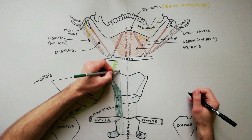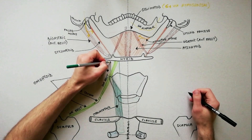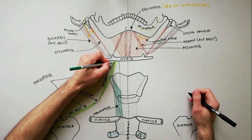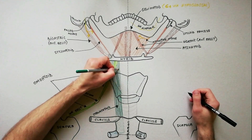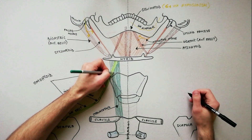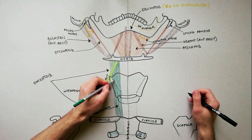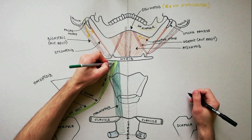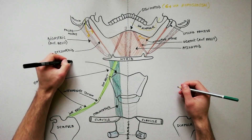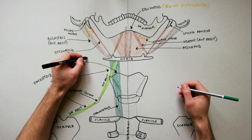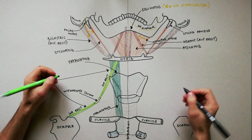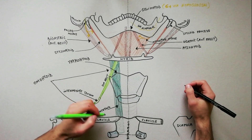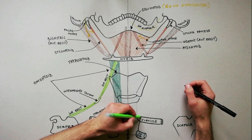The thyrohyoid muscle is an upward extension of the sternothyroid and originates on the oblique line of the lamina of the thyroid cartilage, to be inserted on the lower border of the greater cornu and adjoining part of the body of the hyoid bone.